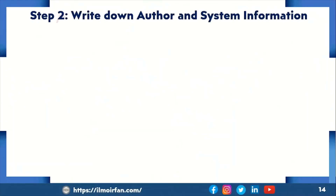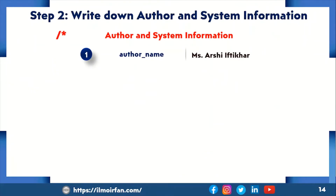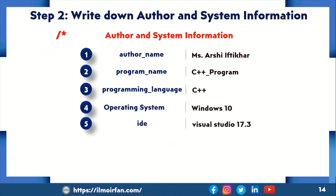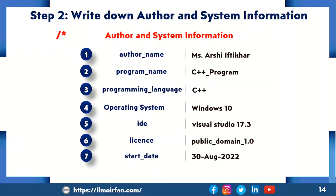Step 2 is write down author and system information. Please note that the author and system information is written in multi-line comments. In C++ programming language, a multi-line comment starts with slash-asterisk and ends with asterisk-slash. The author name is Ms. Arshi Iftikhar. Program name is C++ program. Programming language is C++. Operating system is Windows 10. IDE is Visual Studio 17.3. License of program is Public Domain 1. Program start date and end date are both 30th August 2022.